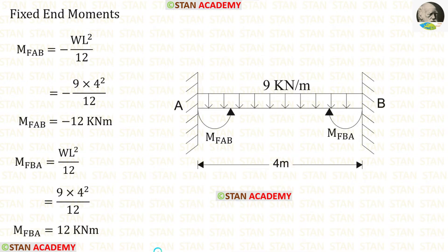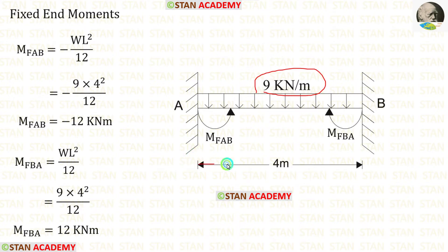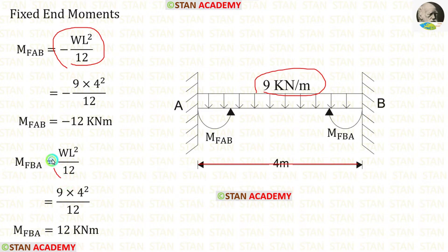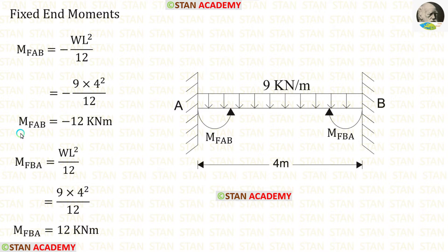Now let us find the fixed end moments. First, let us find them in span AB. In span AB, there is a UDL of 9 kN per meter acting over the whole span. The formulas for finding the fixed end moments are −WL²/12 and +WL²/12. Applying these values, we obtain MFAB and MFBA.